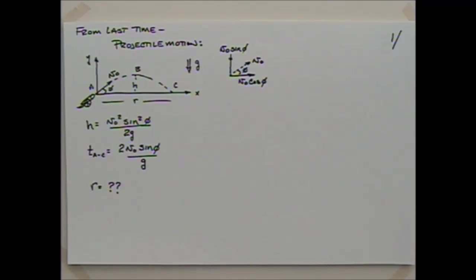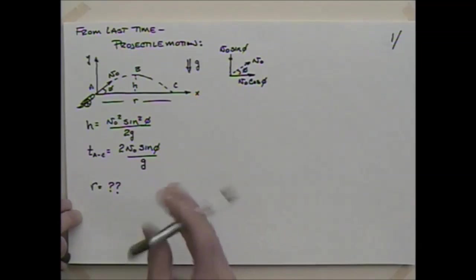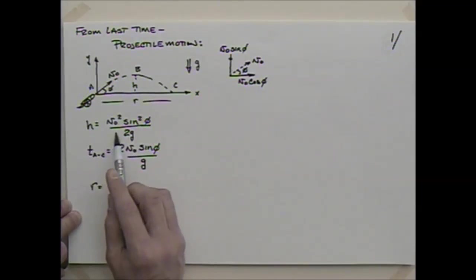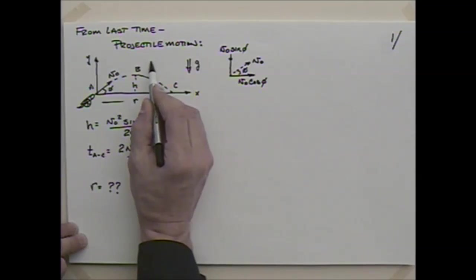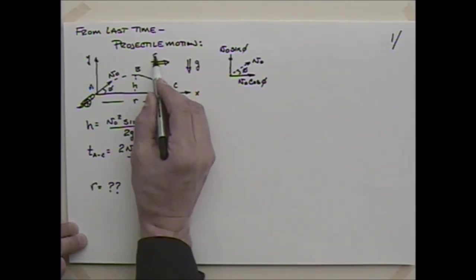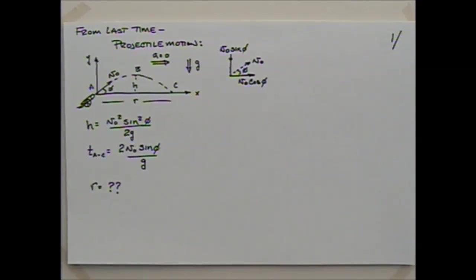We derived last time that the height at the apex — the highest point — is equal to v₀ squared times sine squared φ over 2g. The total time from A to C was equal to 2 times v₀ times sine φ over g. We have left to figure out what the range is. The acceleration in the horizontal direction is equal to zero, which neglects air drag.